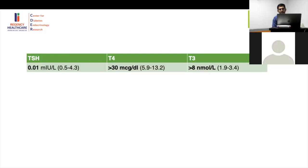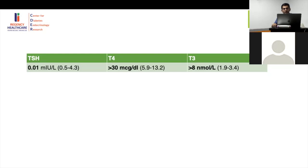In very severe forms of thyrotoxicosis you may have a false negative thyroid scan. This is the big message. Because the cycling is so fast — just like long-acting beta blockers become short-acting in severe thyrotoxicosis because metabolism is accelerated — the same thing happens with the scan. So if you are sure it is Graves disease but there is no uptake, it may be because of this phenomenon. Be aware: a false negative scan can occur in severe thyrotoxicosis.